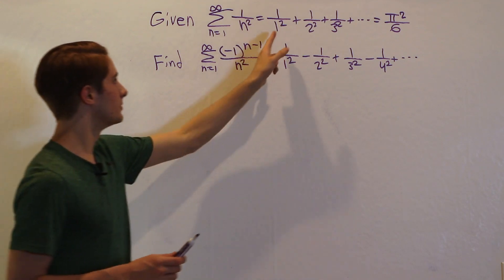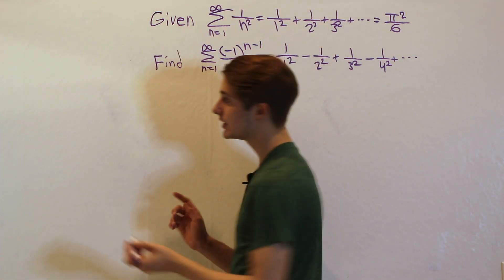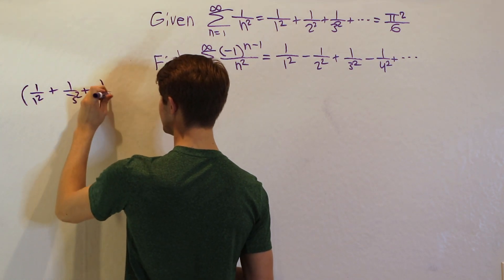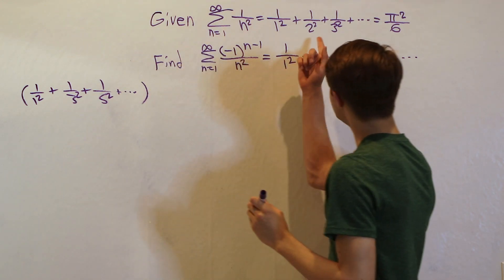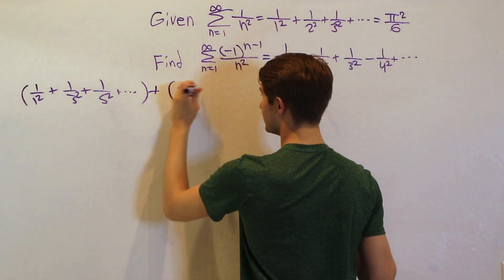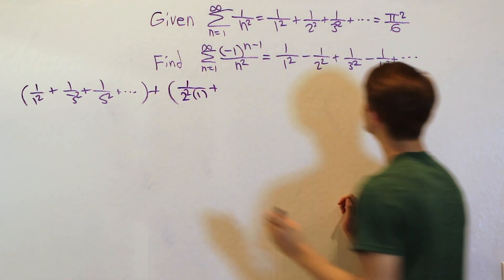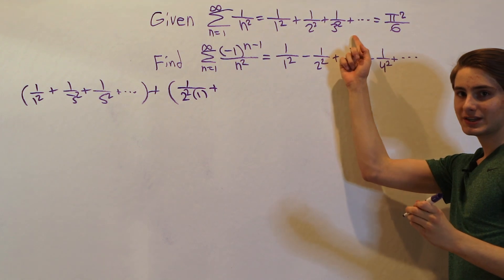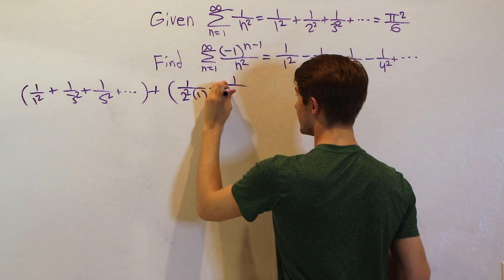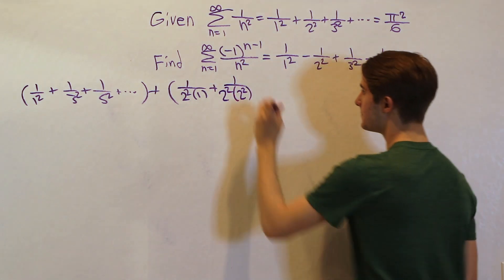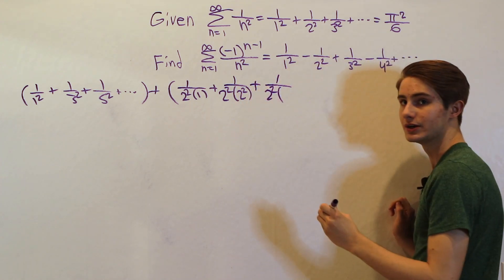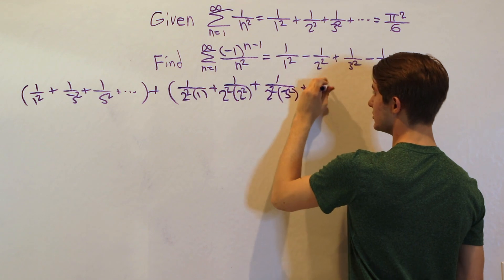Let's start by writing out these terms. First we have the odd terms: 1 over 1 squared plus 1 over 3 squared plus 1 over 5 squared, and so on. Then we have the even terms. Notice that 1 over 2 squared can be written as 1 over (2 squared times 1). Then 1 over 4 squared — we can take out a 2 squared, leaving 2 squared still there. And 1 over 6 squared — if we take out a 2 squared, we have 3 squared left. We can do this forever.